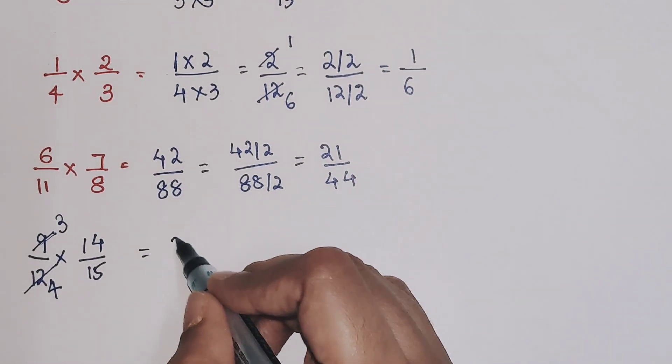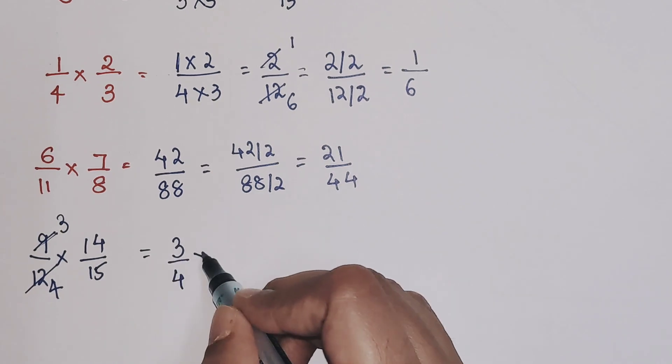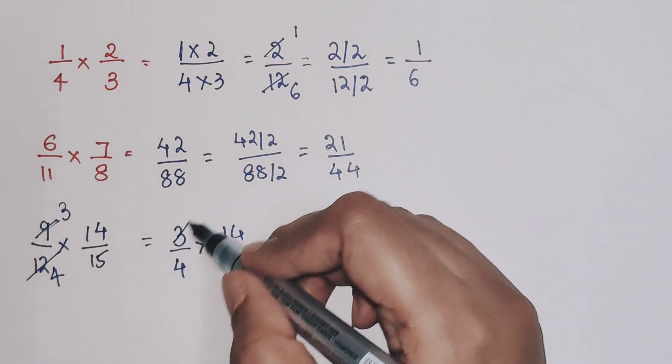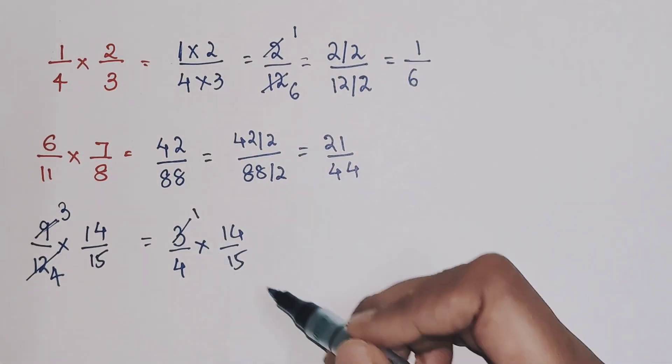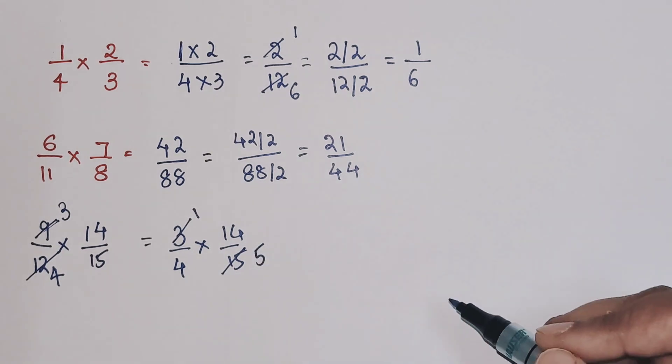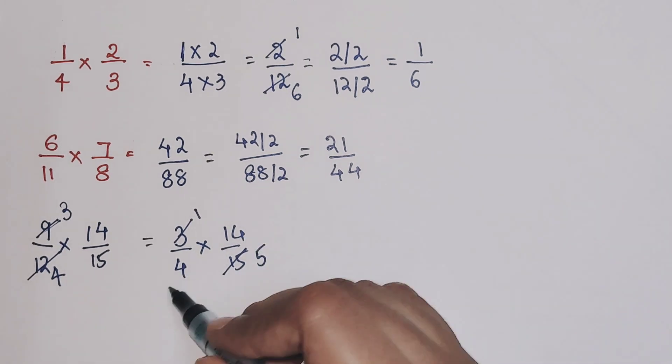So now I am left with 3 upon 4 into 14 upon 15. So now look closely. 3 ones. 3 divided by 3 gets you 1, and 15 divided by 3 gets you 5. Similarly, both of them are even.